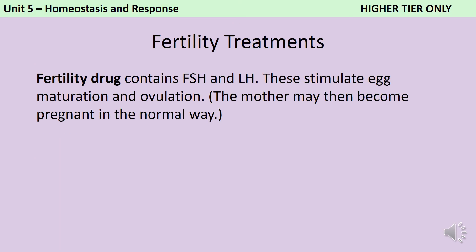If you're taking the higher tier then you need to be able to discuss how hormones can be used as part of fertility treatment, which couples may undergo if they're struggling to have a baby naturally. Some women struggle to get pregnant because they're not ovulating regularly, and so they may take a fertility drug which contains both follicle stimulating hormone (FSH) and luteinizing hormone (LH). Together these will cause eggs to mature and ovulation to happen, and it's possible that the mother may then become pregnant in the normal way.